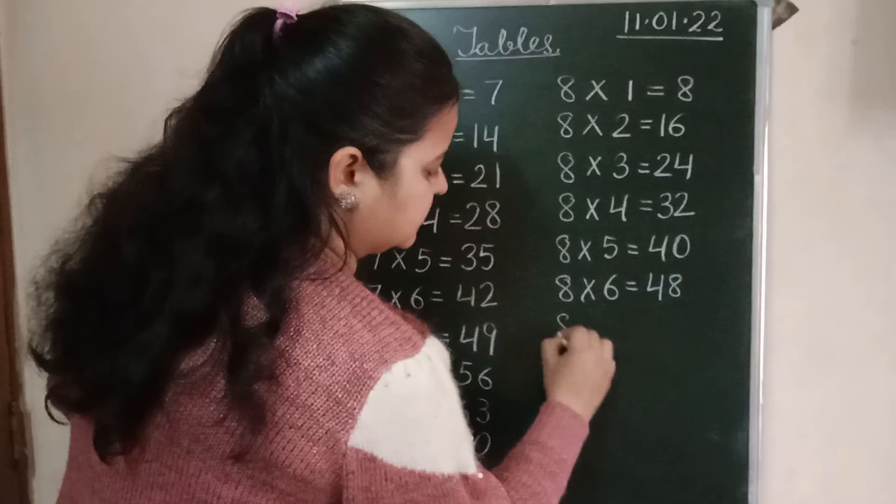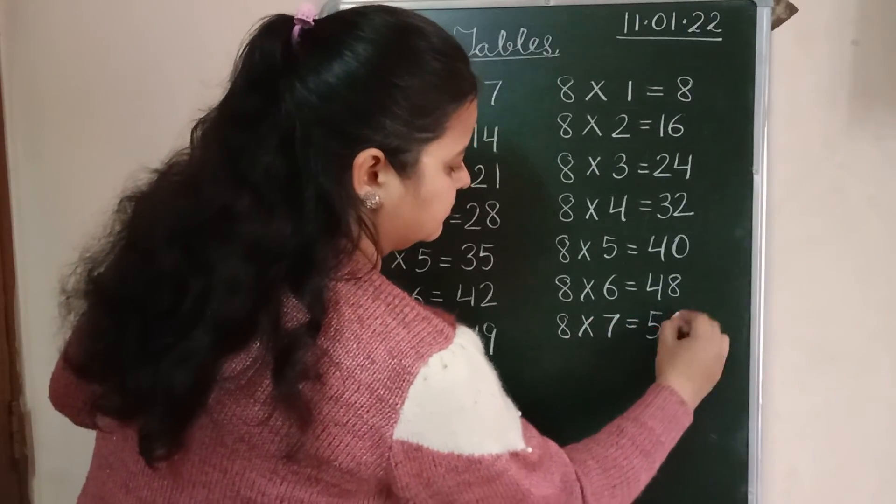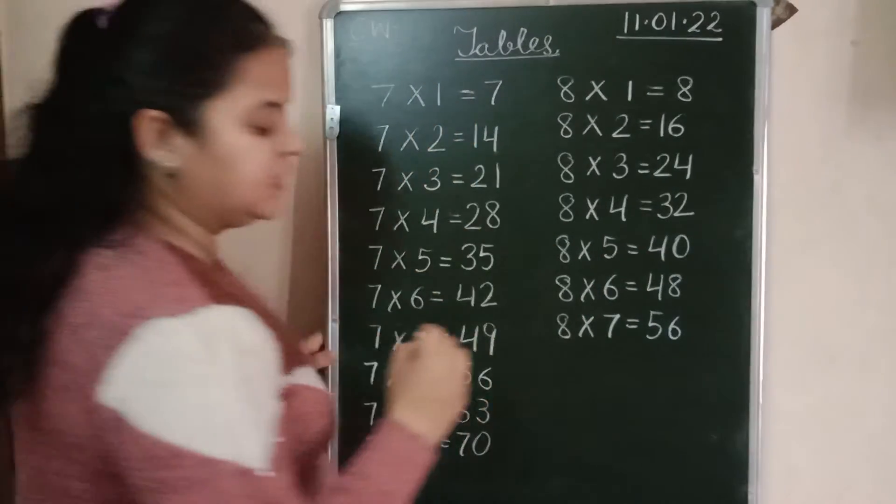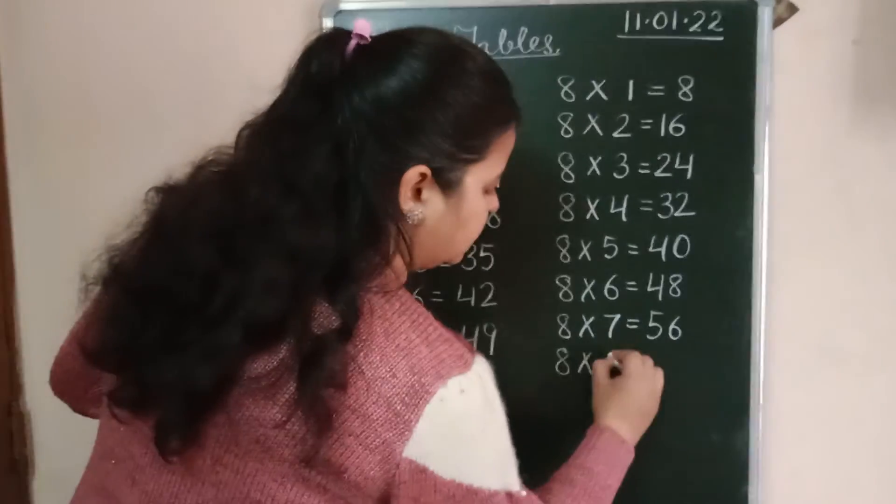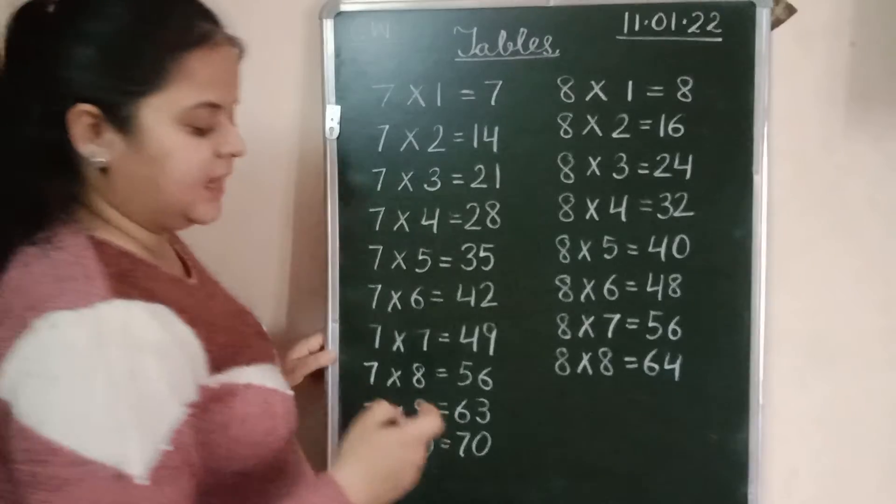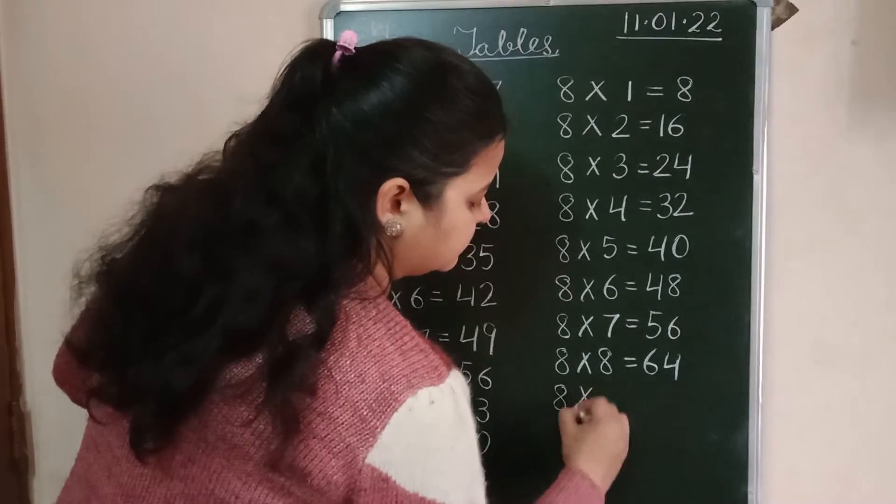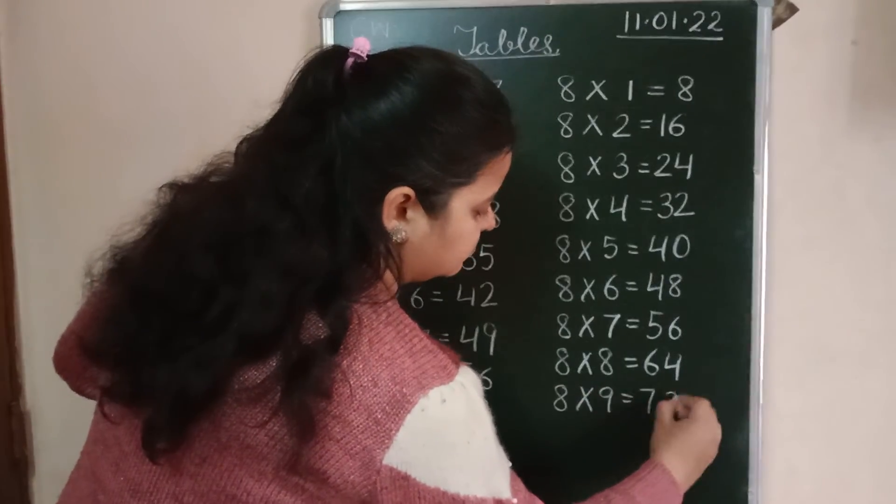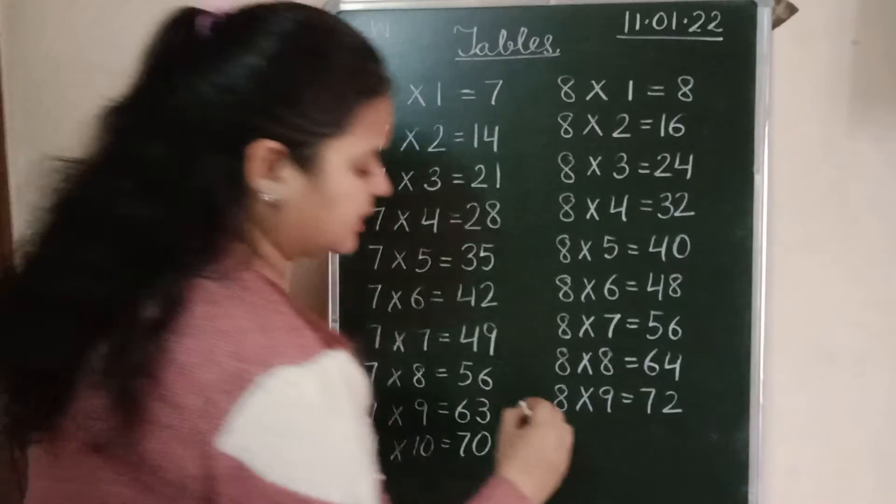8-7s are 56. 8-8s are 64. 8-9s are 72. 8-10s are 80.